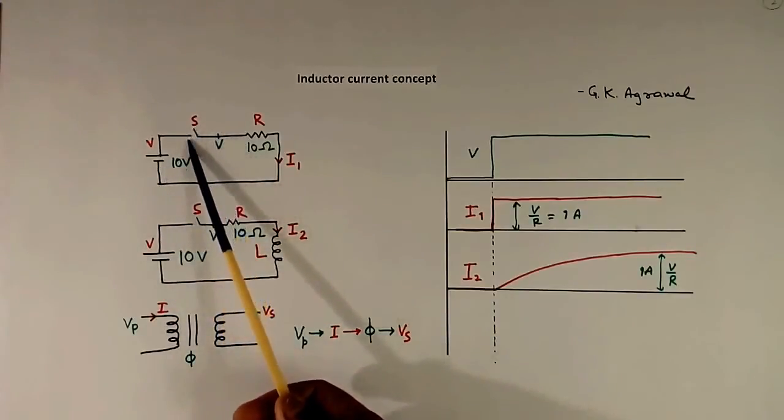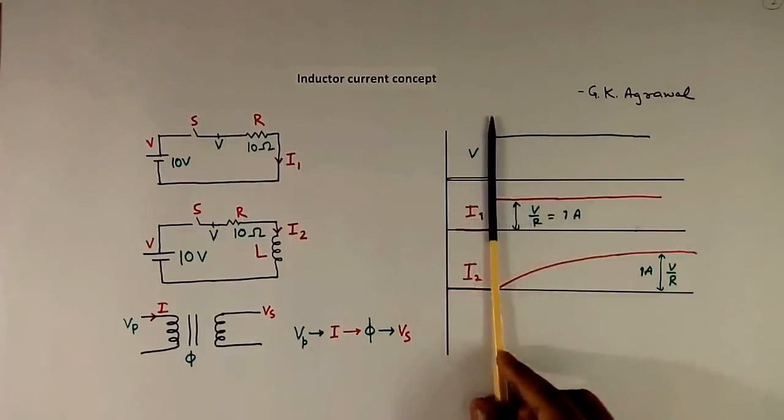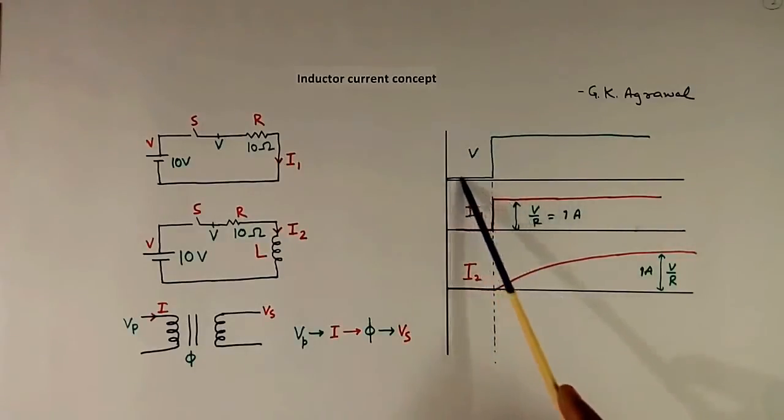When we close this switch, the battery voltage will appear here. Suppose we are closing the switch here. Then voltage will go like this, and current will also flow immediately. This is current I1. The current will be equal to voltage divided by resistance.